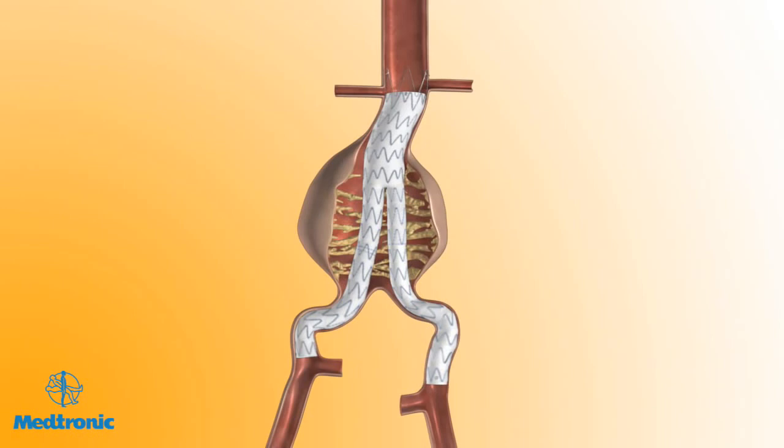If other stent graft components are needed to complete the procedure, please follow the deployment steps for the Endurant Aortic Delivery System for Aortic Extension, Abdominal Tube, and AUI components, and deployment steps for the Endurant Iliac Delivery System for the Iliac Extension component.